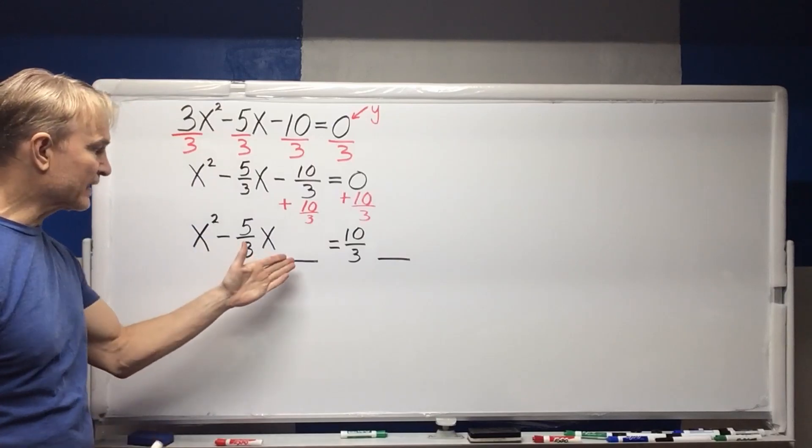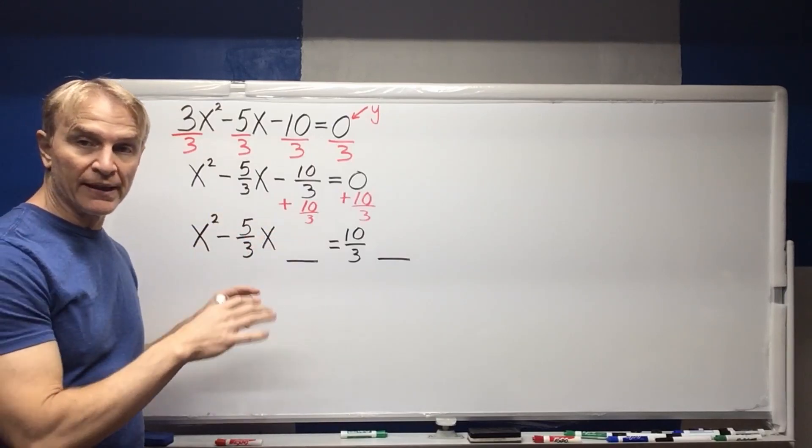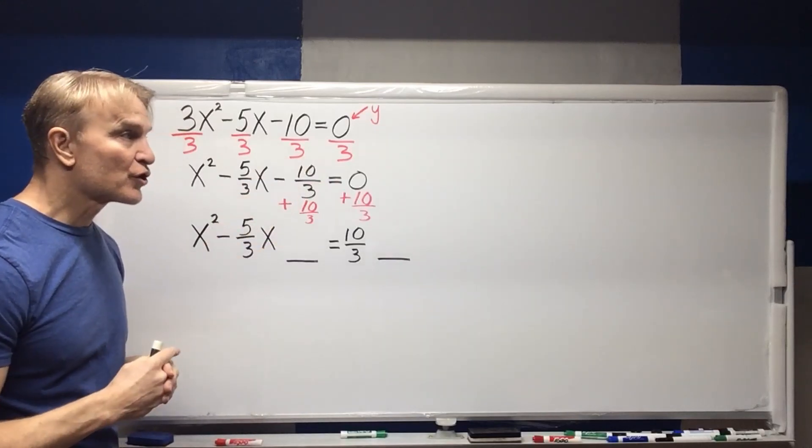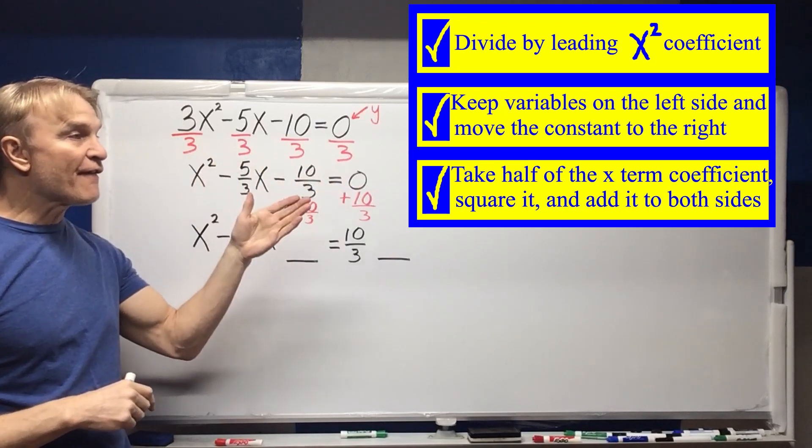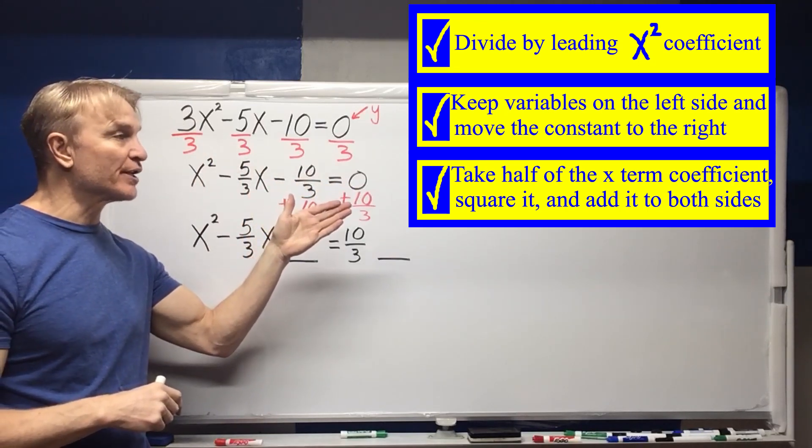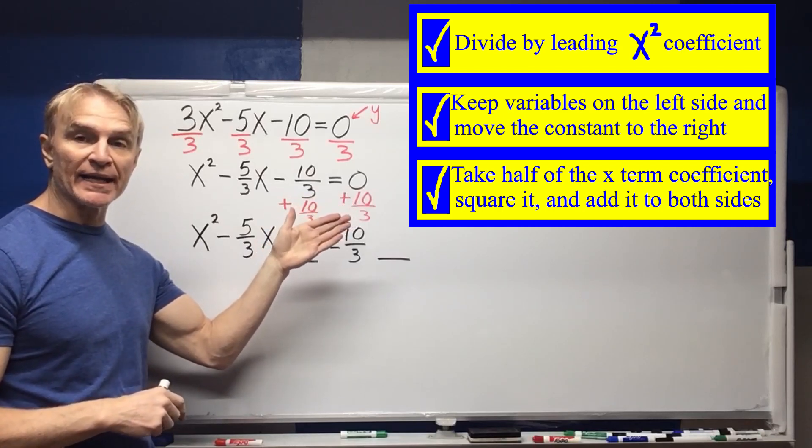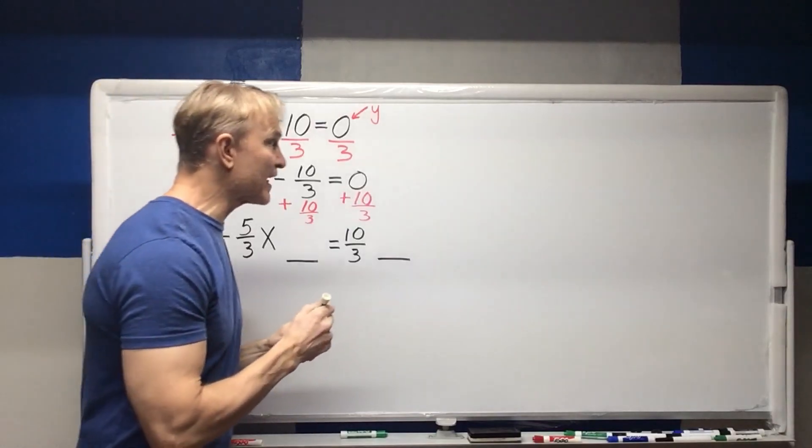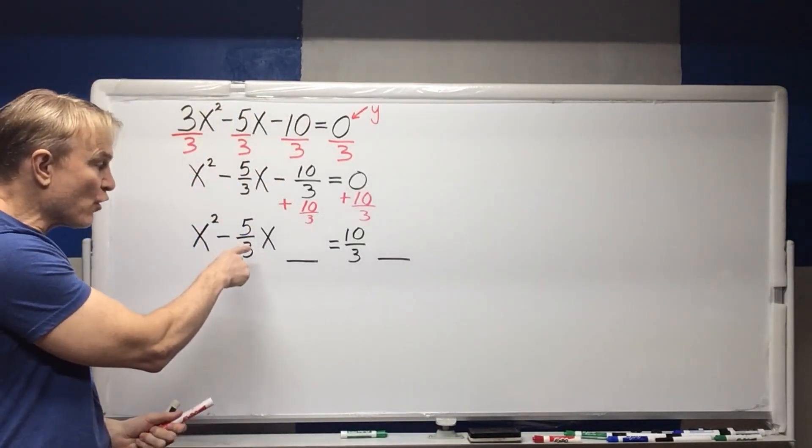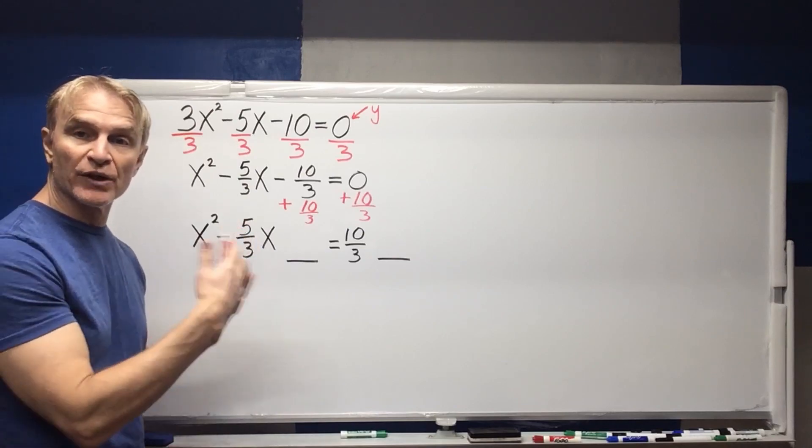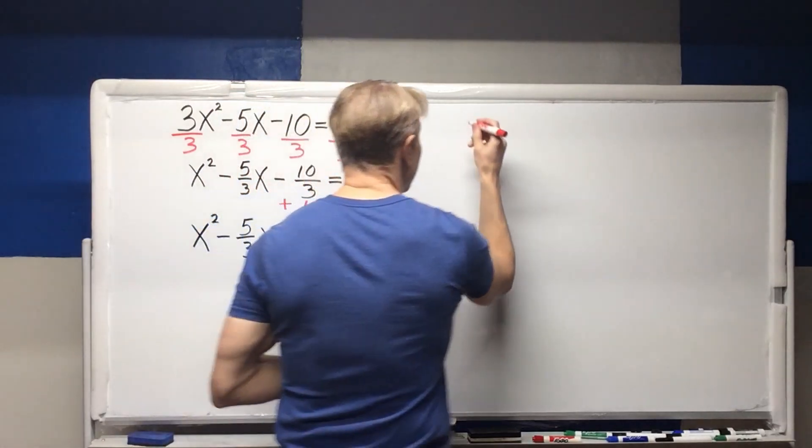So I put these blank spots here because after we complete the square, when we complete it we're going to square and put the number in there. So third step, the next step, take half of the x term coefficient, square it and add it to both sides.